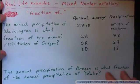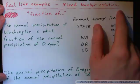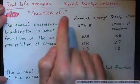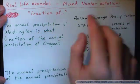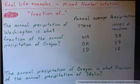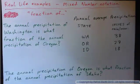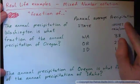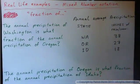In this video we'll look at real-life examples with mixed number notation, in particular if you're asked to get the fraction of one number as a fraction of another number. We'll look at just these examples and then a final question, and we're going to look at annual average precipitation rates in Washington, Oregon and Idaho.